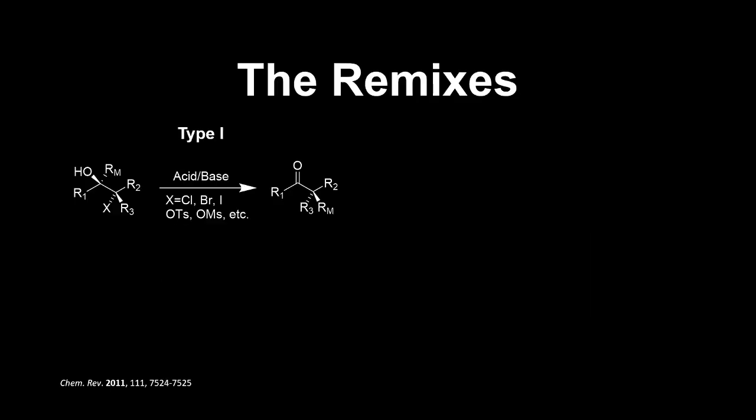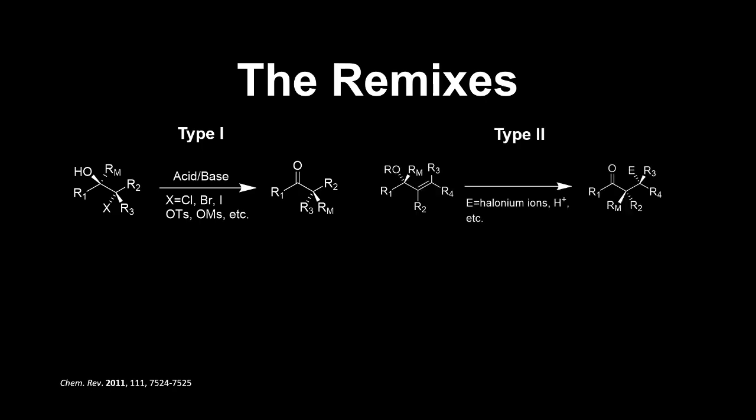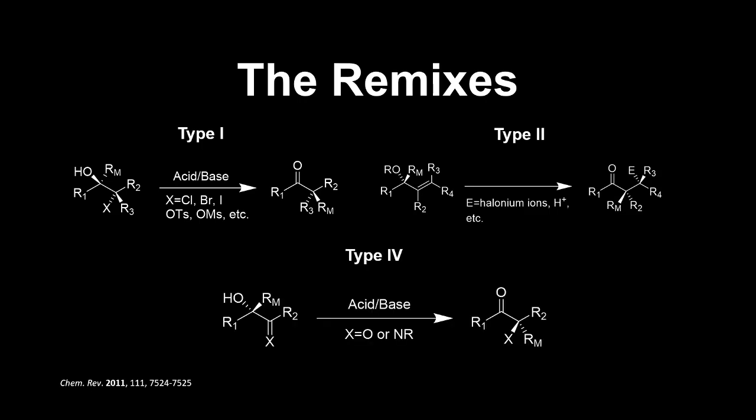Type 1 rearrangements use improved leaving groups to specify which carbon the alkyl group will shift to, and can be done using either acid or base. Type 2 rearrangements use a carbon-carbon double bond and are done using acids or positive ions. Type 4 also uses double bonds, either in the form of a carbonyl or imine, and can also be done using both acid and base.